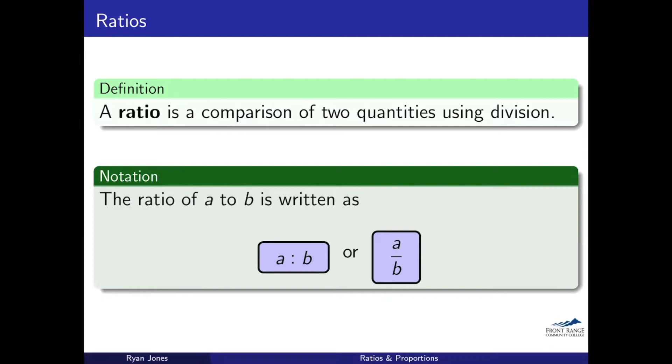But the notation that we'll use for this ratio, let's say that I have two things, whatever quantities they are, I'm going to call them A and B. If I say the ratio of A to B, I write that in one of two ways. I write it in a ratio format, A with a colon B. The other way you can write it is just like you would write a fraction, A over B.